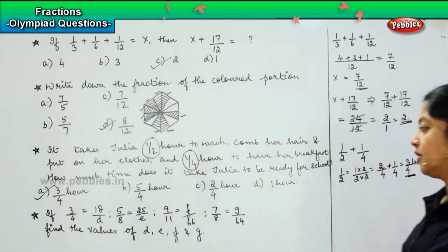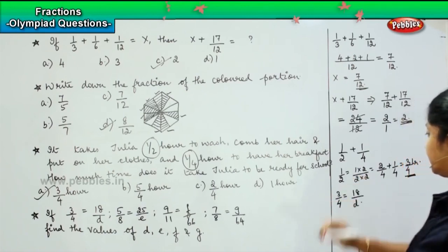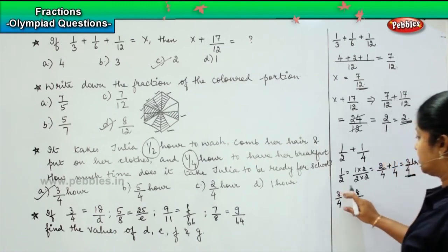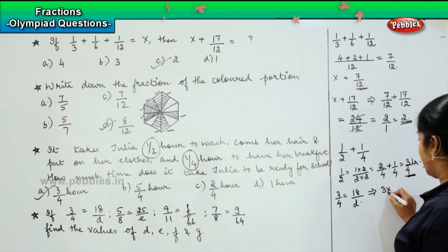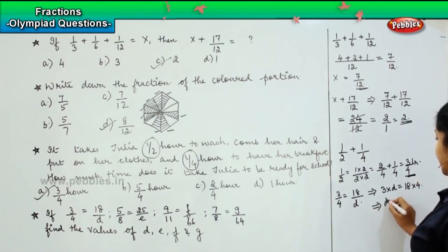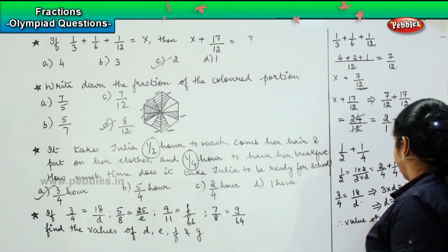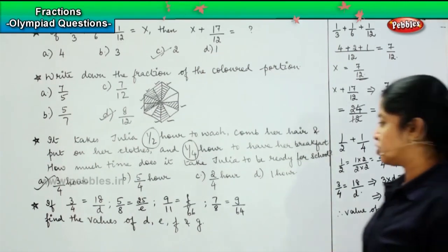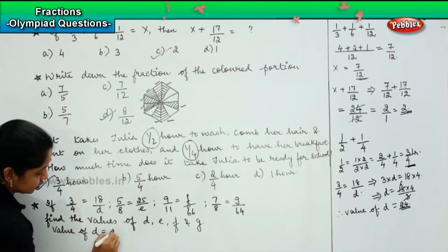It is a critical thinking question. For 3/4 = 18/D, we use cross-multiplication: 3 into D equals 18 into 4. So D equals 18 times 4 divided by 3. Since 3 sixes are 18, and 6 fours are 24, the value of D is 24.